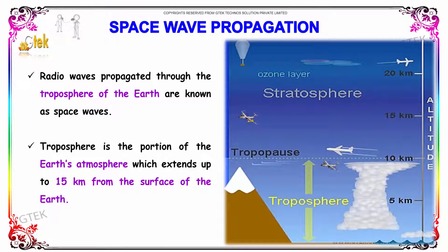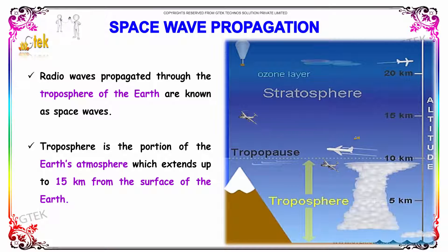For space wave propagation, radio waves propagated through the troposphere of the earth are known as space waves. The troposphere extends about 5 km from the earth, above which is the stratosphere.